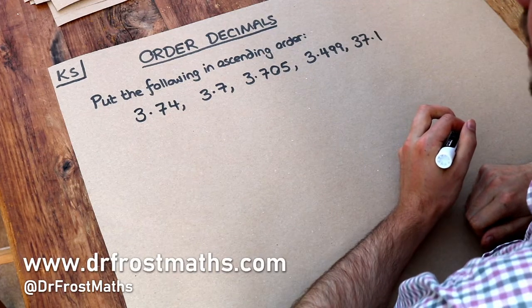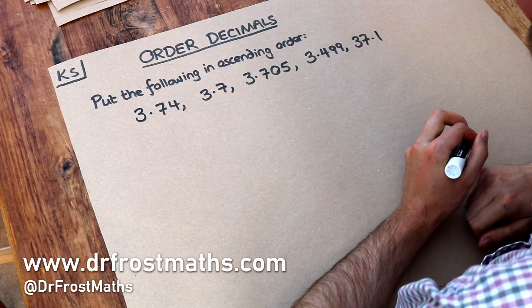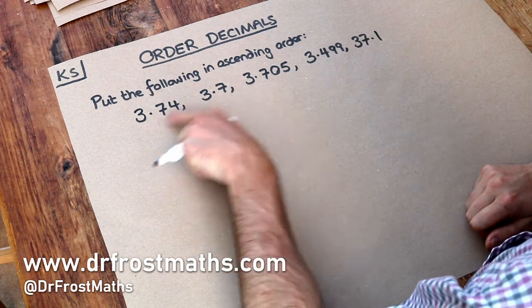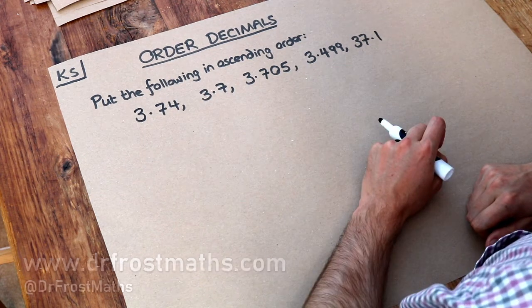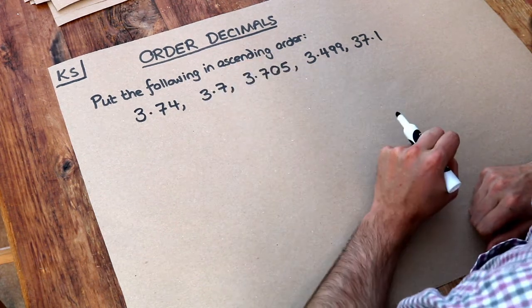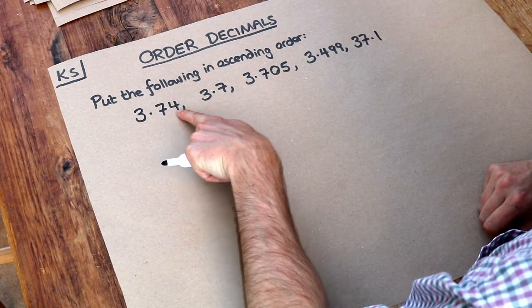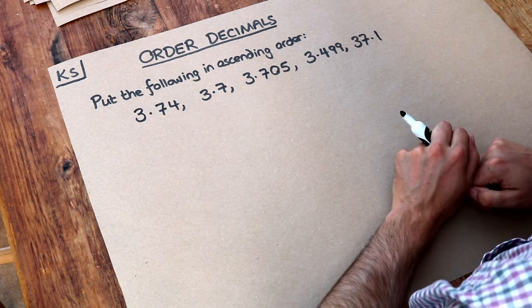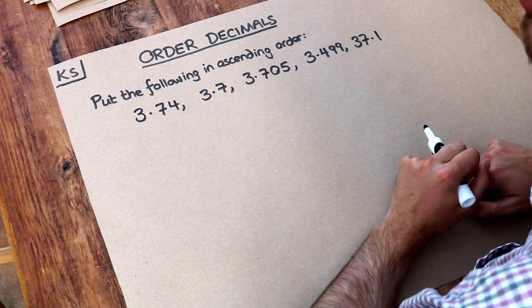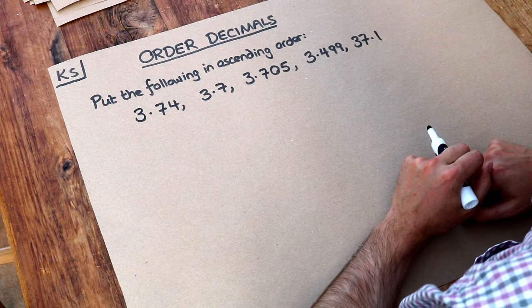Hello and welcome to this Dr. Frost Maths key skill video on ordering decimals. Now we have these different decimal numbers here and we want to put them in ascending order. That means from smallest to largest. And what makes them decimals is that we have digits after the decimal point. And we saw that in the previous video on knowing the place value of decimal numbers.